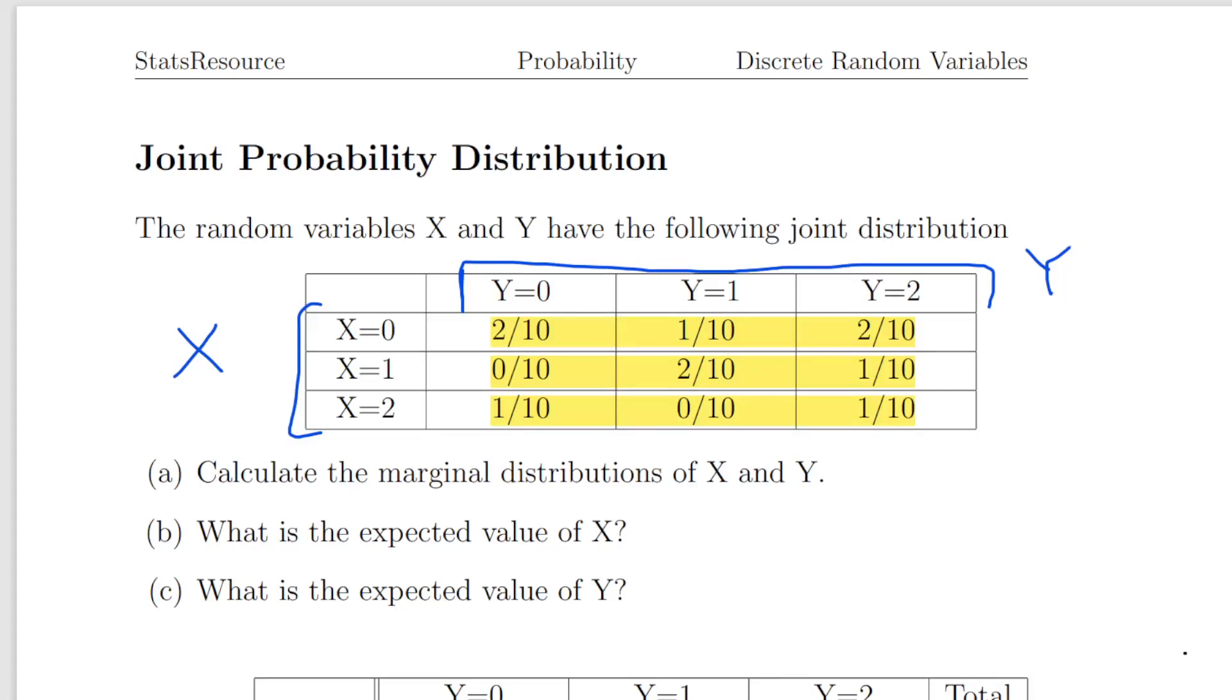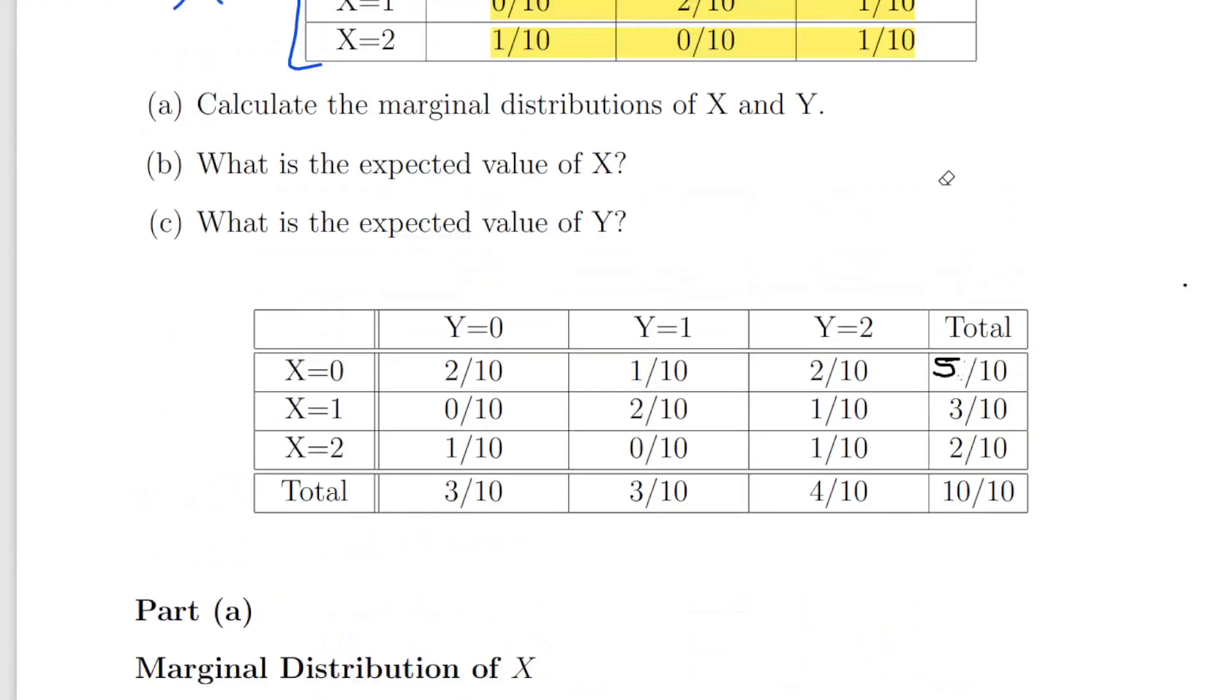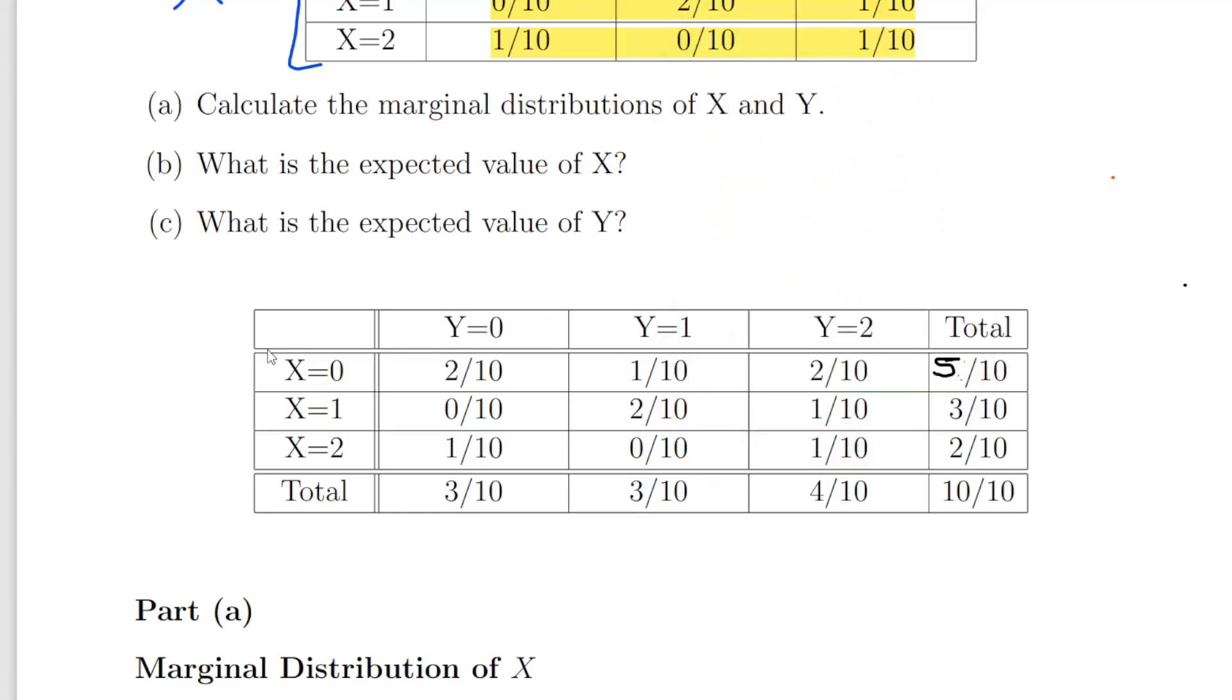Something we should do later on is just check that the total sum of all these probabilities add up to one. If it doesn't, there's a mistake. Now the first question is calculate the marginal distribution of X and Y, then calculate the expected value of X and then calculate the expected value of Y. So it's a short enough question really just to get started with.